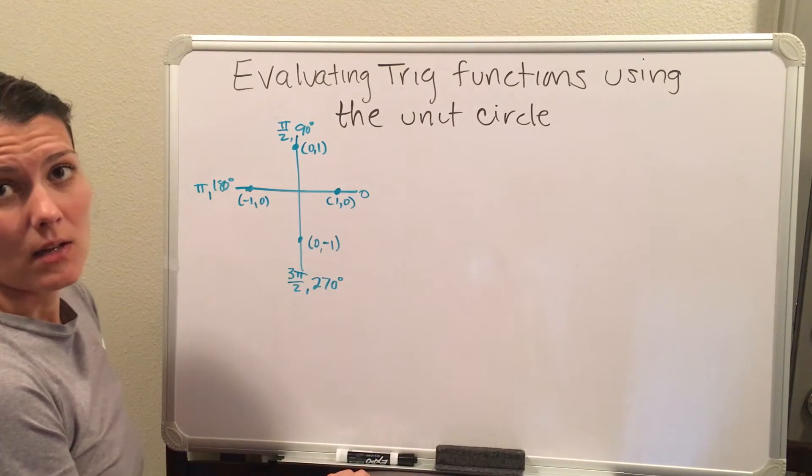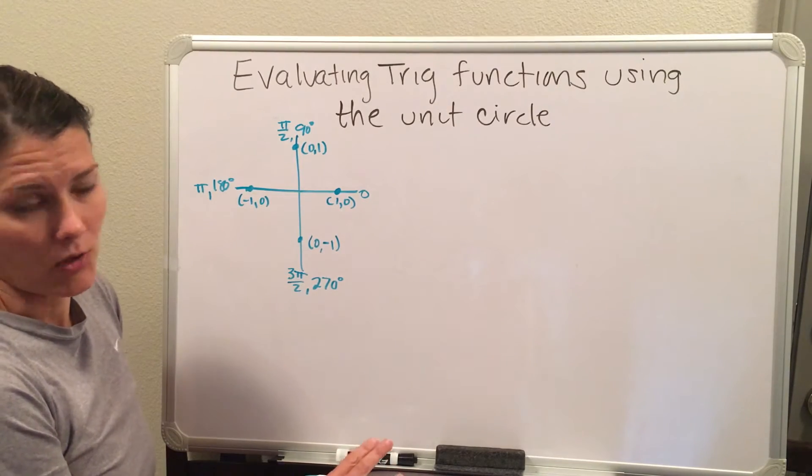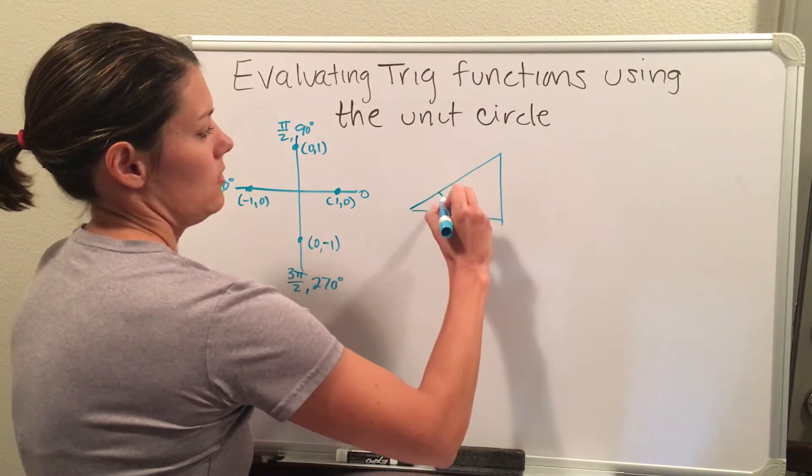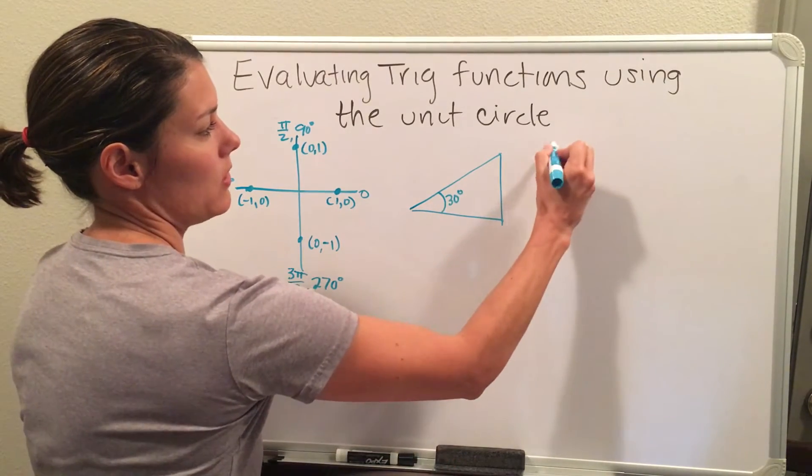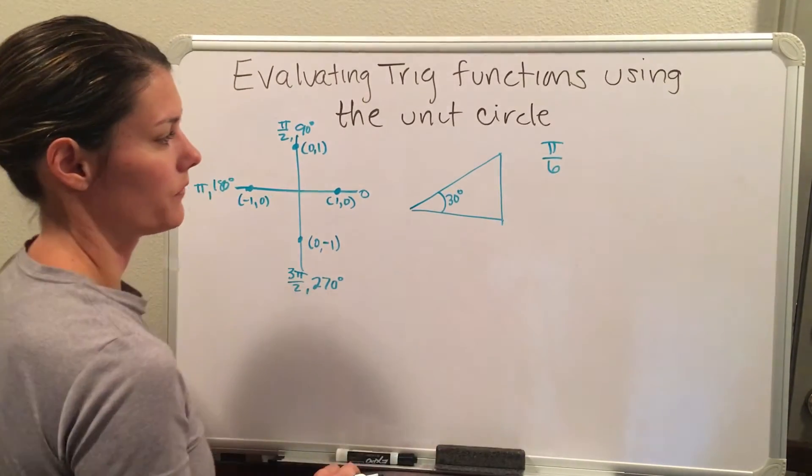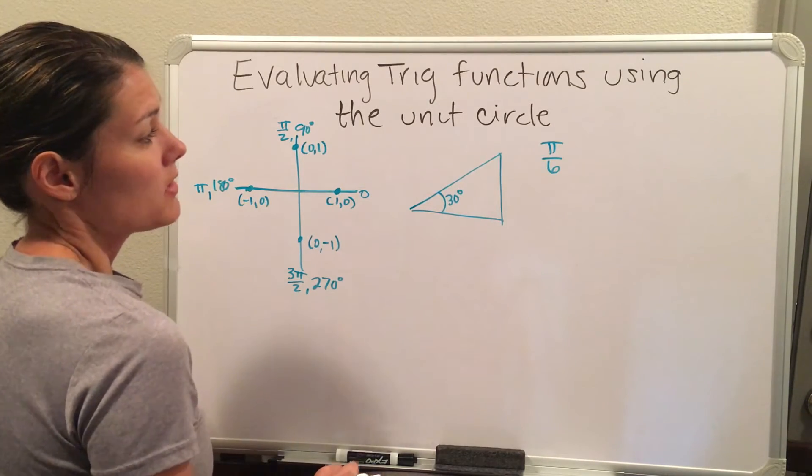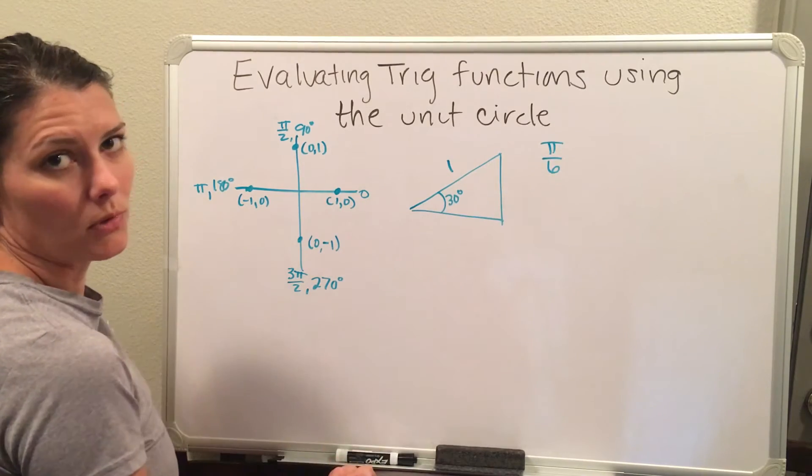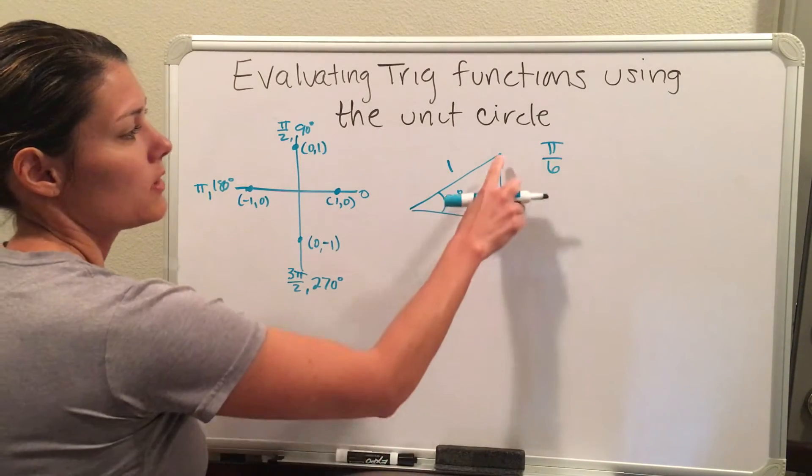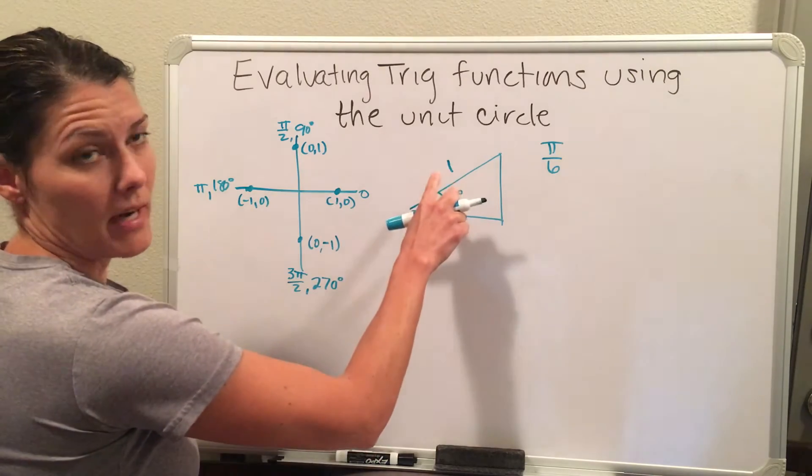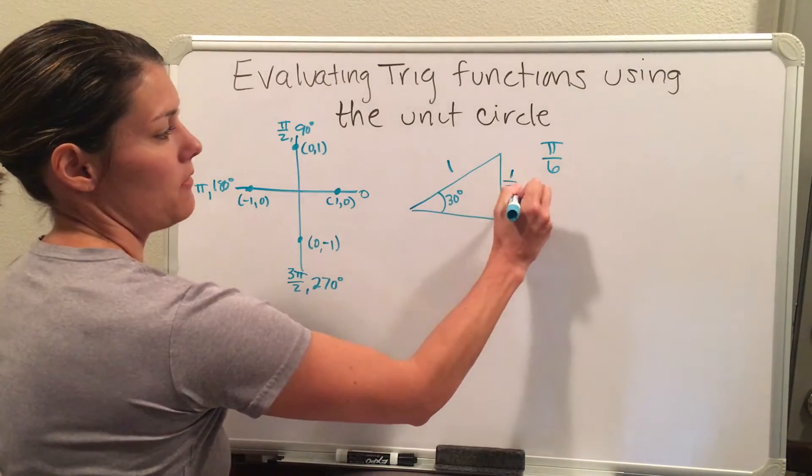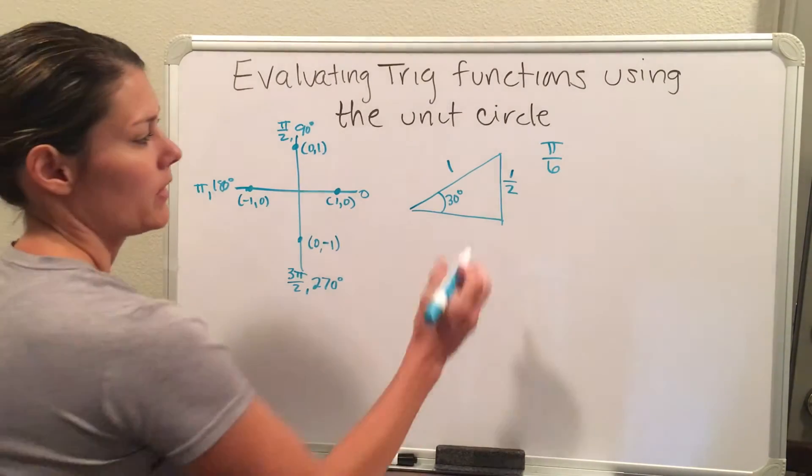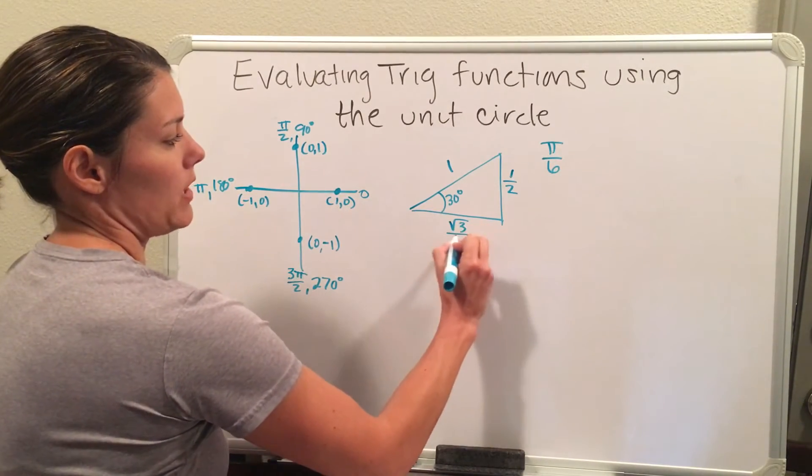Another part of the unit circle is a 30-60-90 triangle. So if I have a 30-degree angle here, this is also known as my π over 6s. The unit circle is a radius of 1, so I'll put 1 right there, and then you can use your 30-60-90 rules to recreate the rest of the triangle. The short leg is half of the radius, so that will be 1/2, and the long leg is the short leg multiplied by square root of 3. So that will end up being √3 over 2.